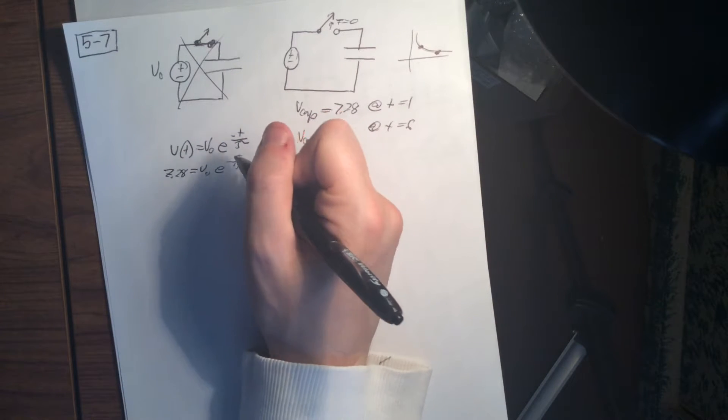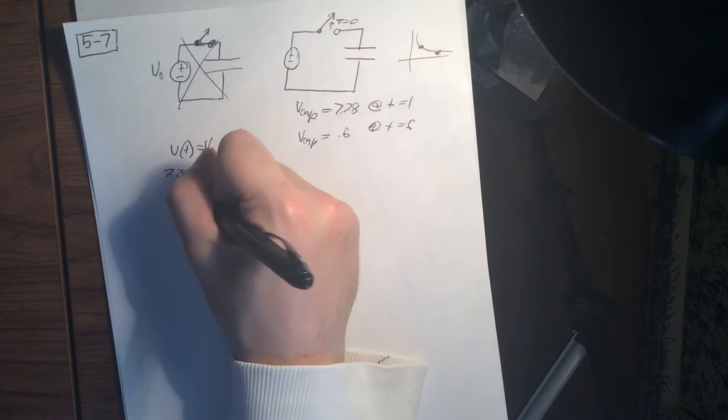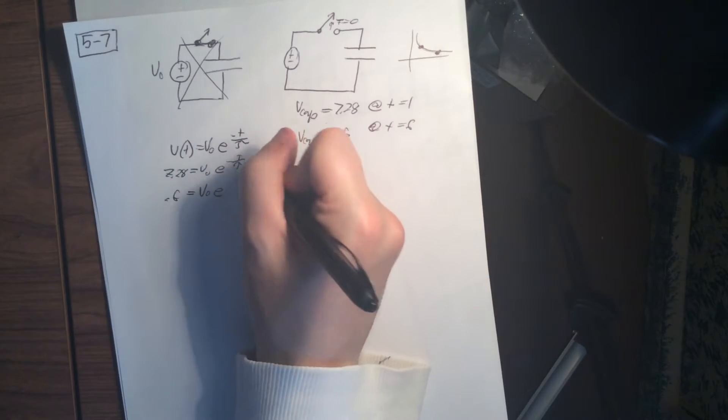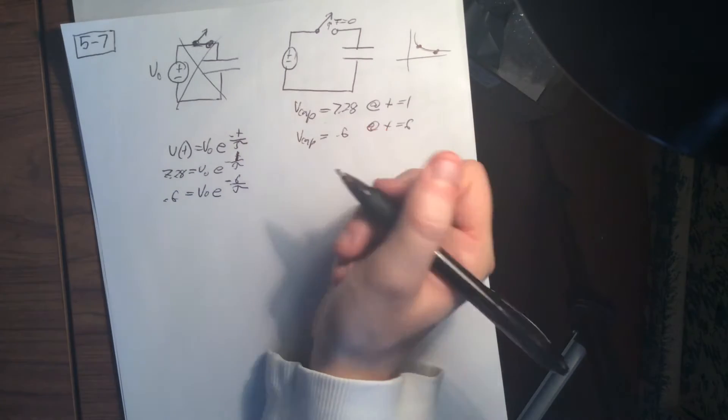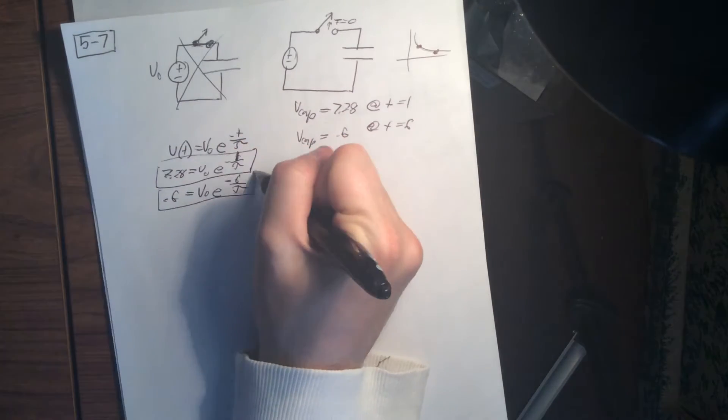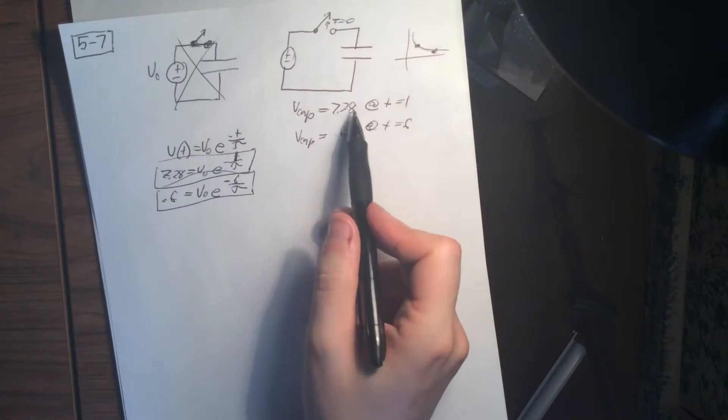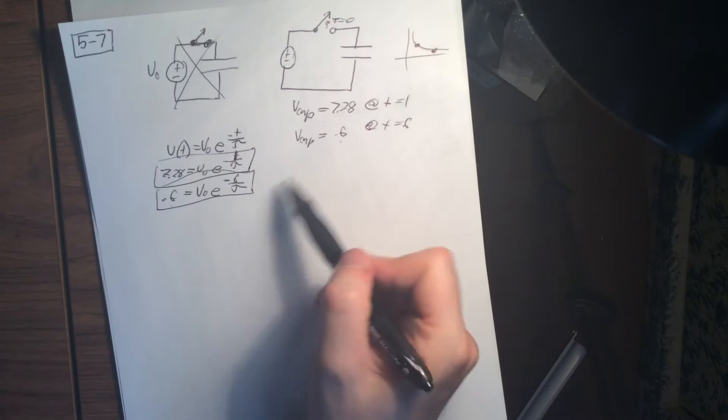So then we're also going to get our 0.6 equals V0 times e. And this is 1, sorry. This would be e to the minus 6 over tau. Okay. So these are our two equations here, 1 and 2. And that comes from 7.1 and 0.6.